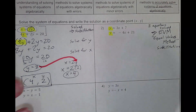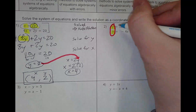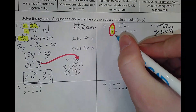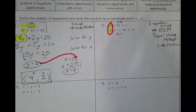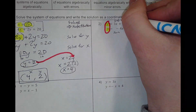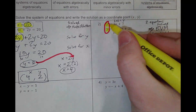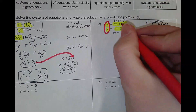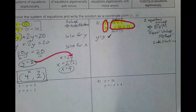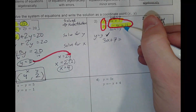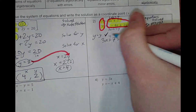Why? Do you agree that y is equal to y? If y equals one expression and y equals another expression, they both equal y, so those expressions must be equal to each other — that's the equal values method. I must set those two equations equal to each other. So y equals y, we know that. But 3x plus 7 equals negative 4x plus 21 — that is y equals y.